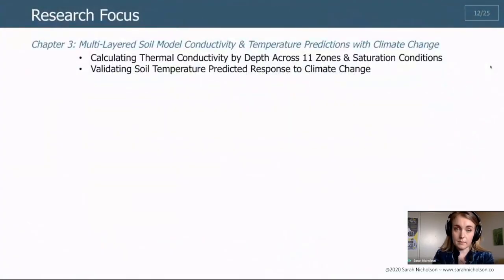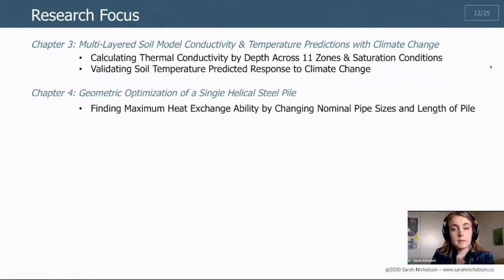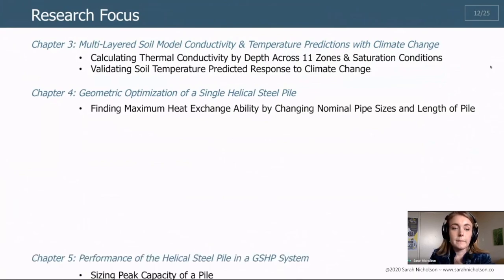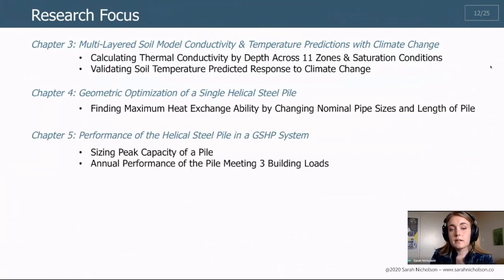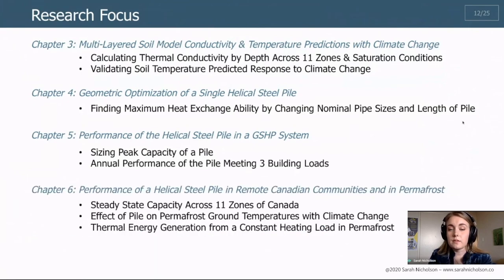This research focus is divided into a couple chapters. The first one was spent developing a more detailed soil model and creating a database of soil conductivity by depth with Lea Kober, my undergraduate research assistant who helped me with this. Then geometric optimization of the single pile was performed. So finding with nominal pipe sizes the best thermal capacity. This was also done with assistance from Lea Kober. Then I measured the approximate peak capacity of the pile when used in operation with the building as well as an annual performance across three building loads. And finally I measured its performance in remote Canadian communities and in permafrost. This last two sections is what I'm focusing on in my presentation today.